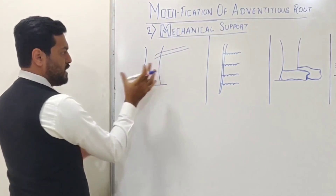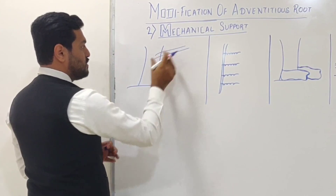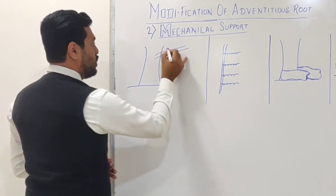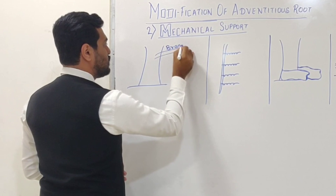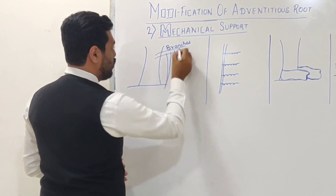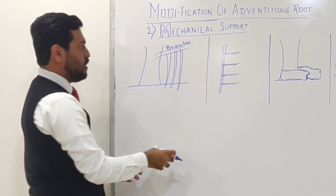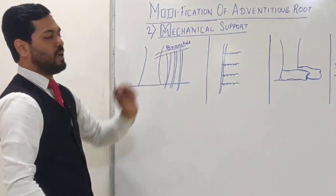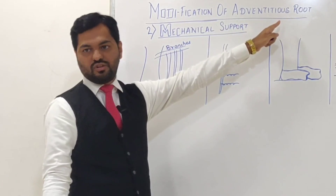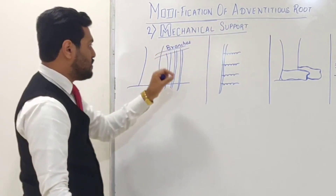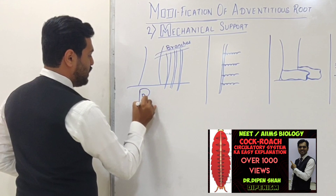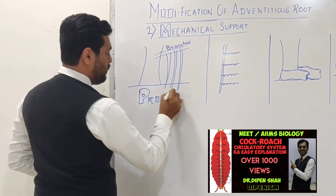The first modification for mechanical support is seen where the stem is quite strong but as the tree grows older, it needs additional support. From horizontal branches, many roots arise and these roots grow vertically downwards into the soil, providing mechanical support. Since these are not developed from the radicle, they are adventitious. This type of root is known as prop roots.